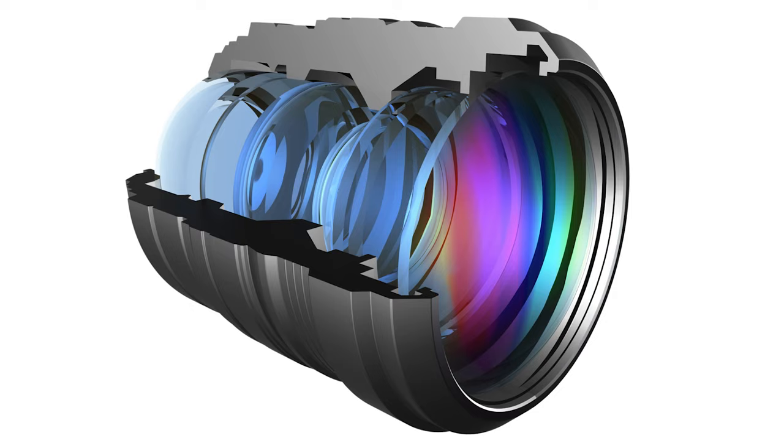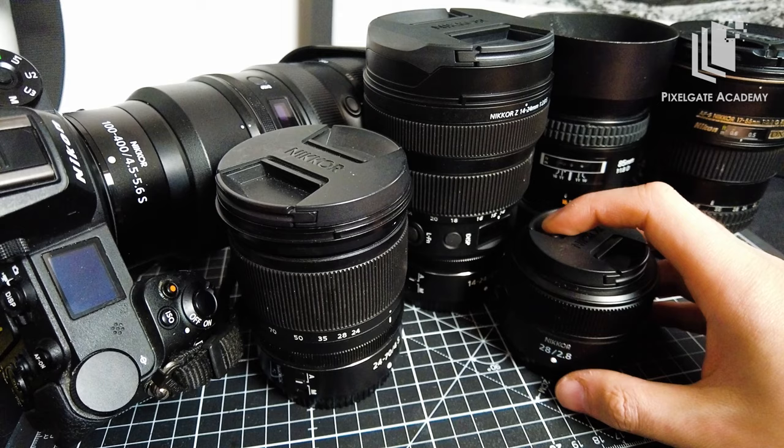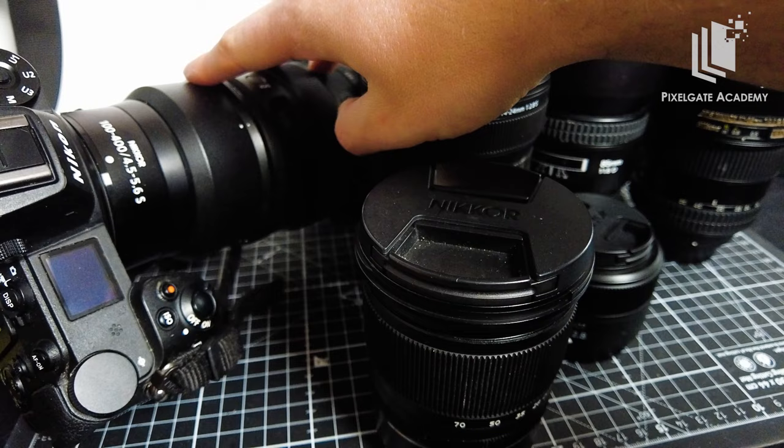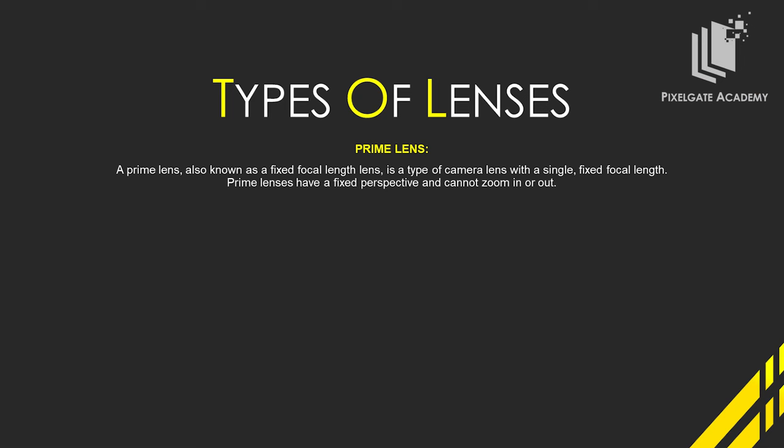We take them one by one. I have a couple of prime lenses here, a couple of zoom lenses, and a big telezoom lens. We have different types of lenses. We have prime lenses. A prime lens is known as a fixed focal length — it's a type of camera lens with a single fixed focal length. Prime lenses have a fixed perspective, cannot zoom in or zoom out, and usually have a big aperture.